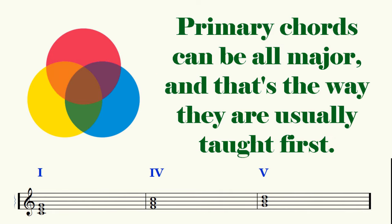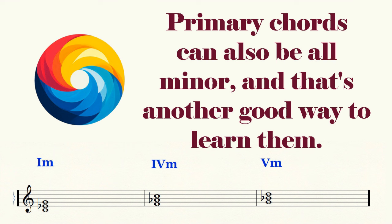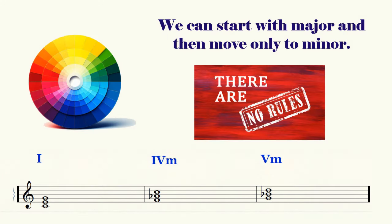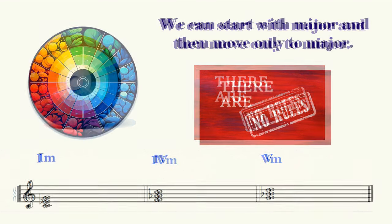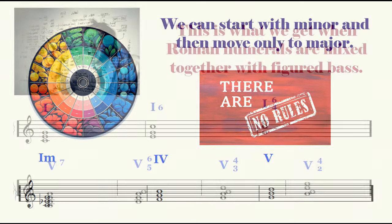I will only mention that these primary chords may be major or minor in any combination. They can be all major, they can be all minor, they can move from major to all minor, and they can move from minor to all major. Any combination of major and minor is possible in music that is not restricted to some narrow system. So when we use Roman numerals for broad concepts, they can be very convenient and therefore very useful.